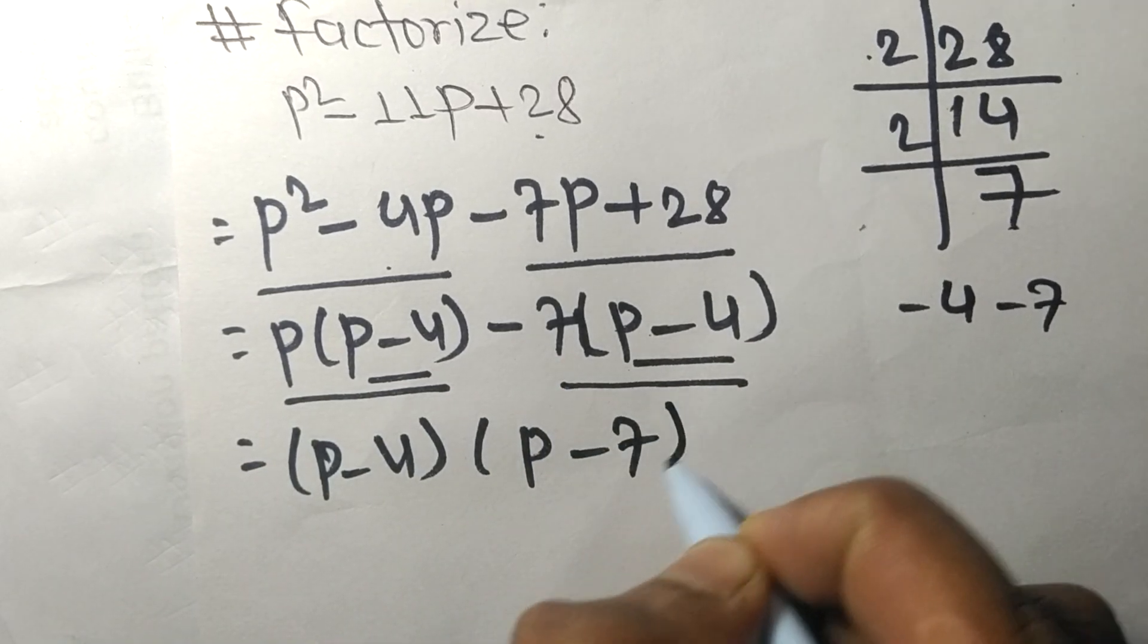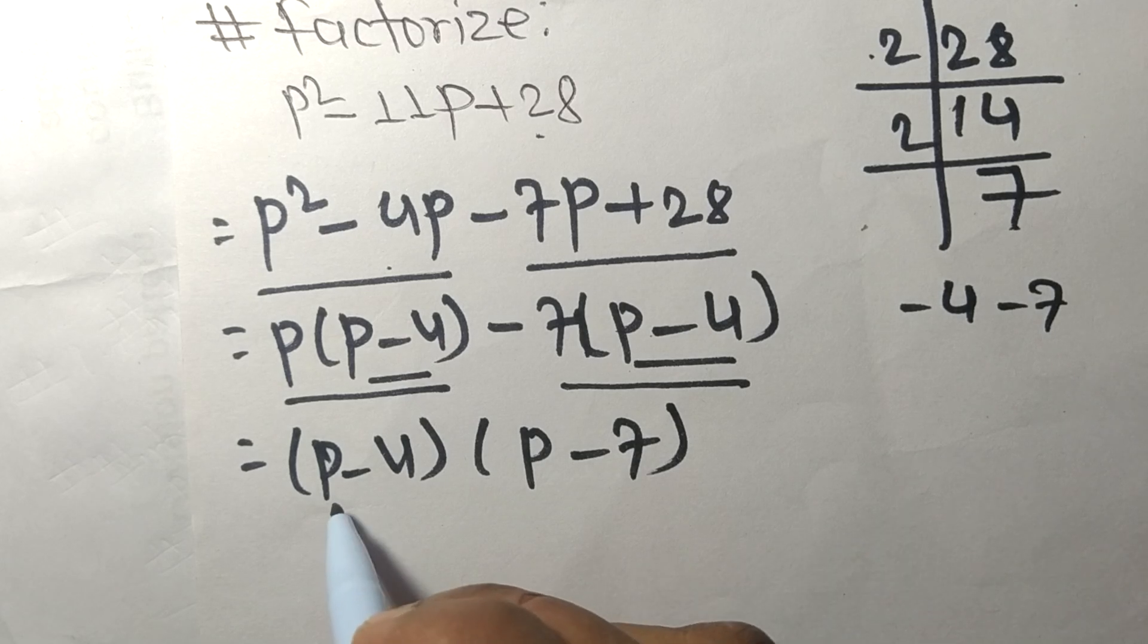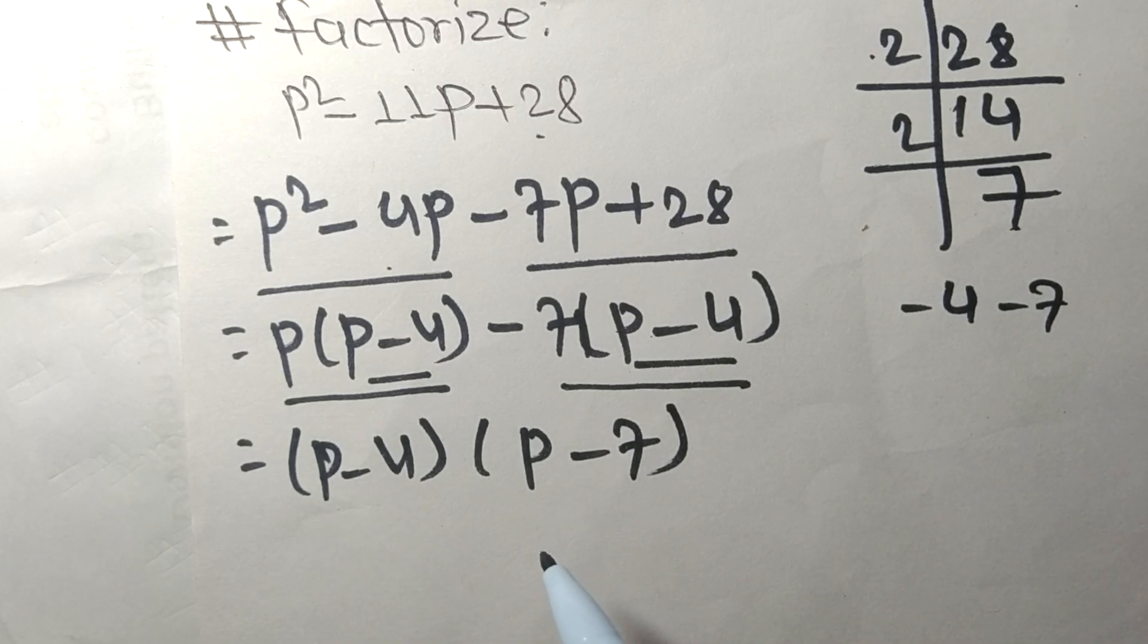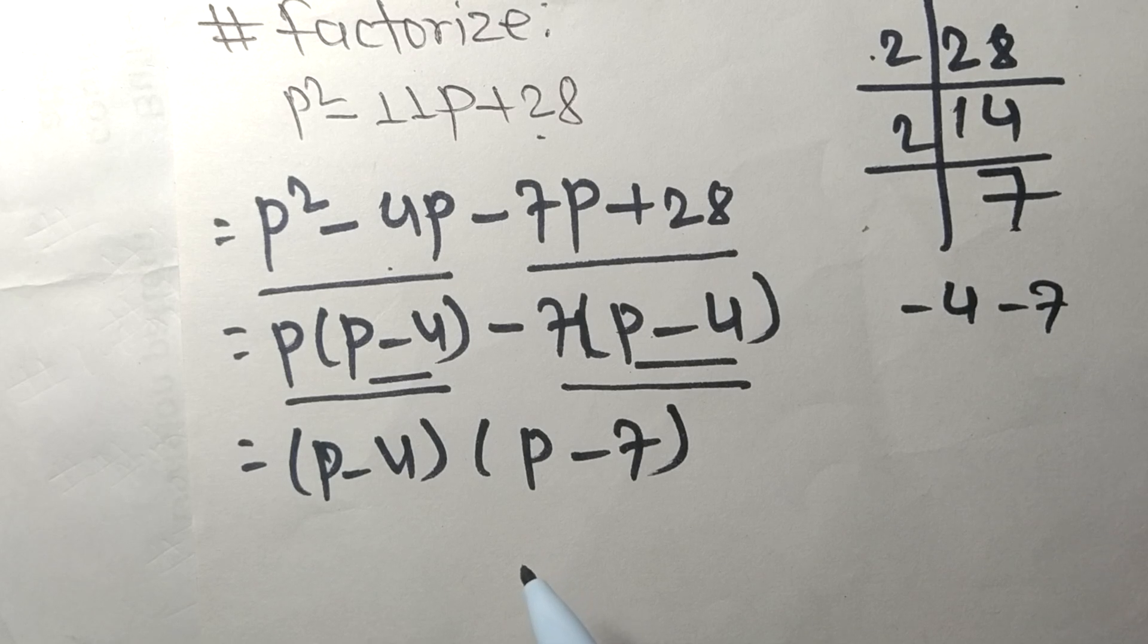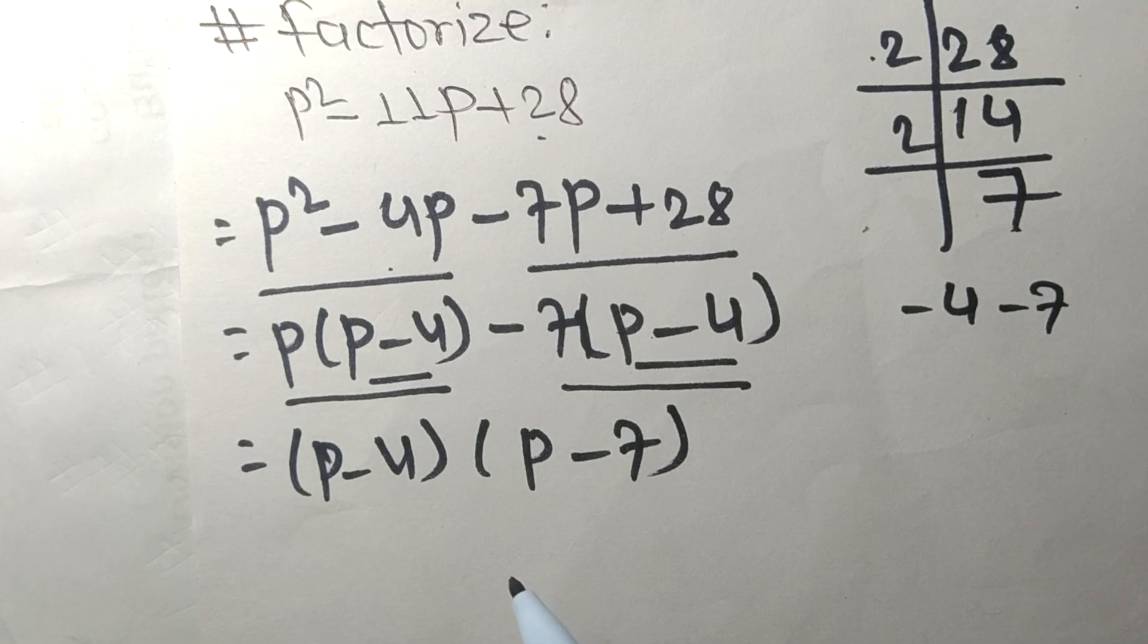So P minus 4 and P minus 7 are the required factors. This much for today, and thanks for watching.